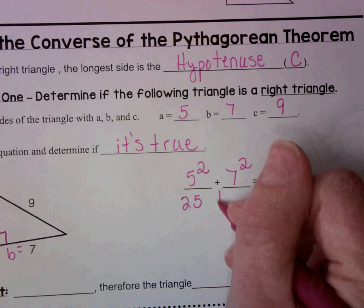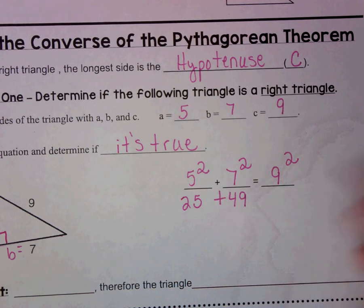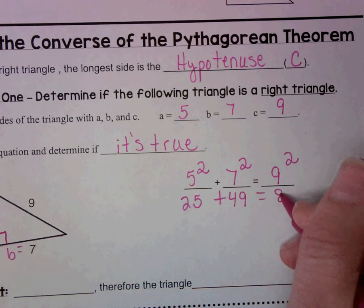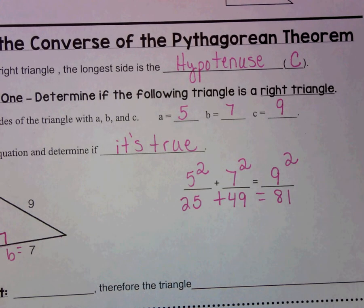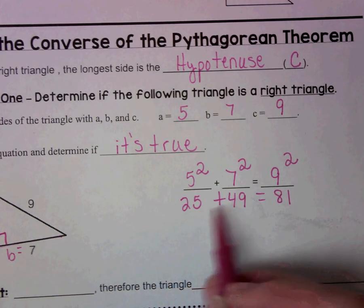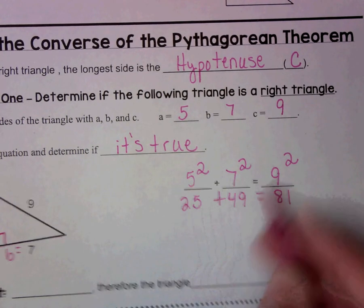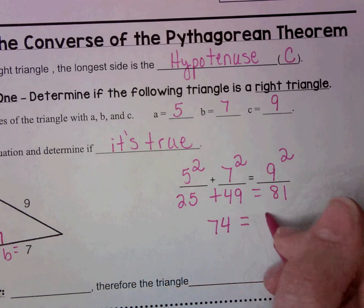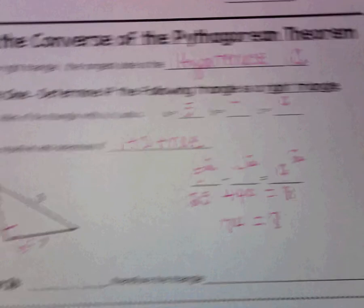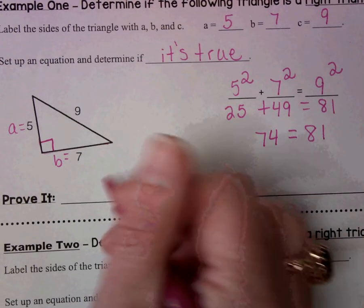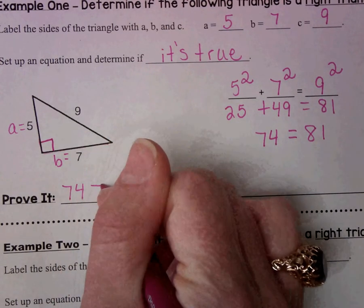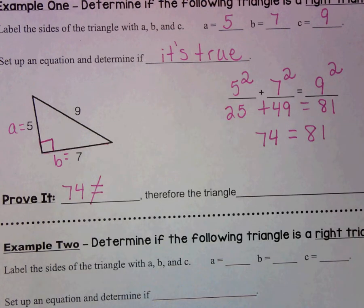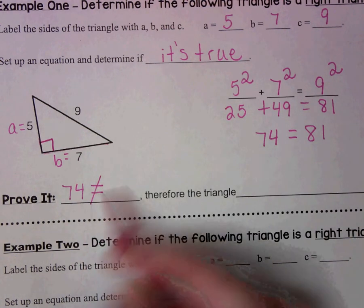So let's test it. 5 squared is 25. 7 squared is 49. 9 squared is 81. So let's check. What is 25 plus 49? That is 74.